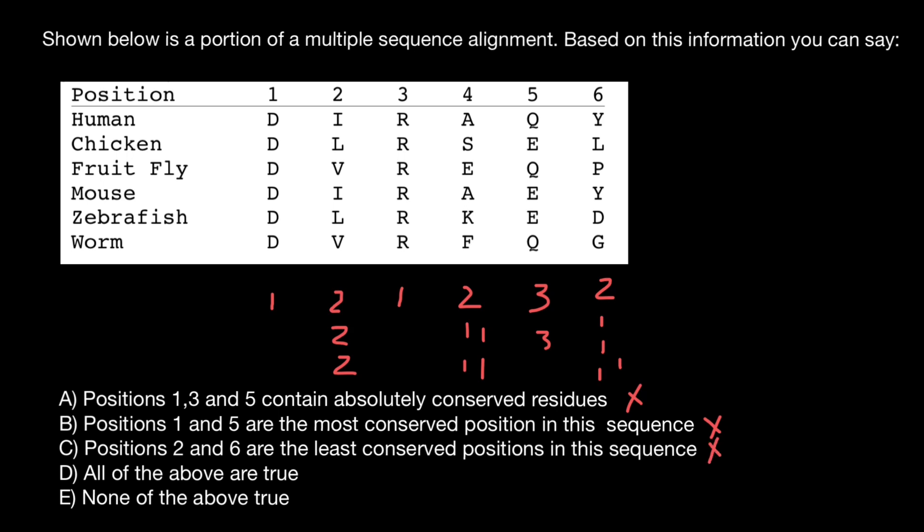So now we can choose that the correct answer is going to be answer E. None of the above is true statement. Of course nowadays nobody is doing this type of job, multiple sequence alignment, manually. It's done by software and computers. But I hope now you have an idea how multiple sequence alignment works. And this is all for today. Subscribe and see you in the next video. Goodbye.